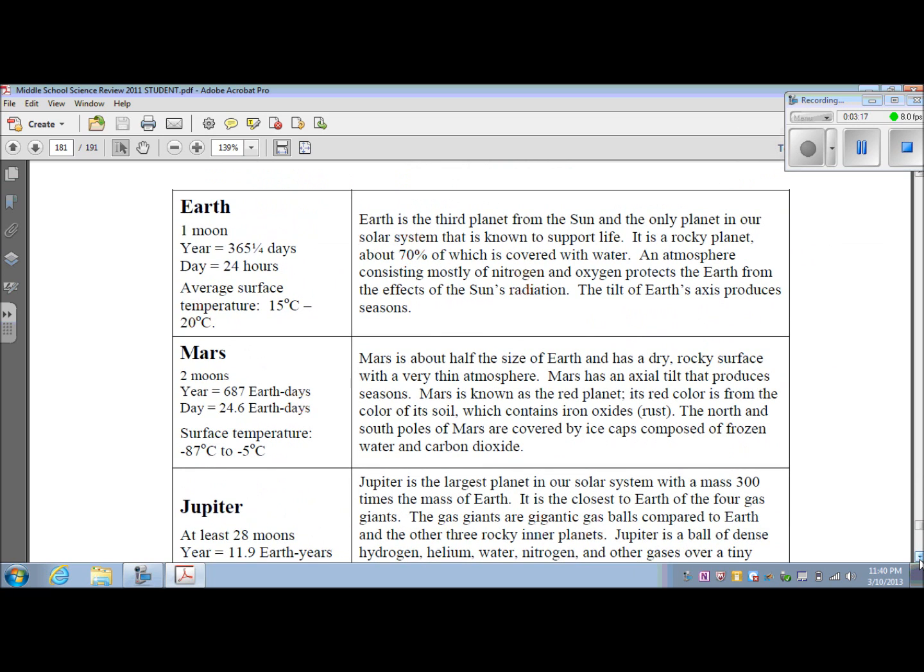The next planet is Earth. It has one moon. Its year is 365 and a fourth days, which is why we have a leap year every four years. The day is 24 hours. The average surface temperature is between 15 degrees Celsius and 20 degrees Celsius. Earth is the third planet from the Sun and the only planet in our solar system that is known to support life. It is a rocky planet, about 70% of which is covered with water. An atmosphere consisting mostly of nitrogen and oxygen protects the Earth from the effects of the Sun's radiation. The tilt of Earth's axis produces seasons.